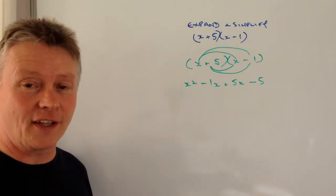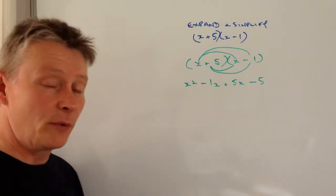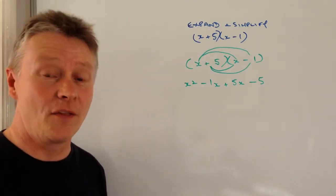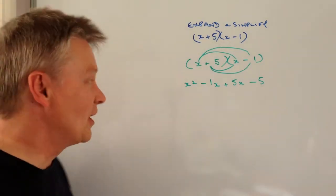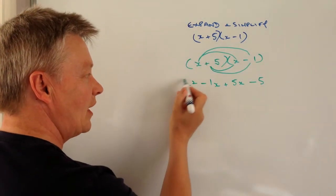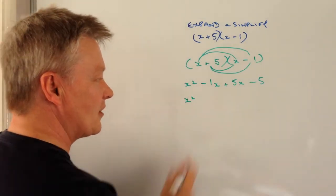It's just a case of tidying that up and making it look more presentable. We call it gathering the like terms. The first term is X squared, and that stands on its own because it's a term all of its own.